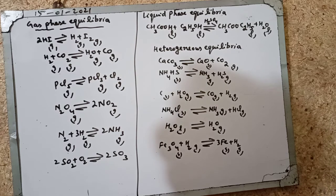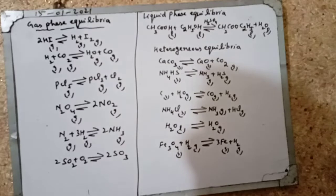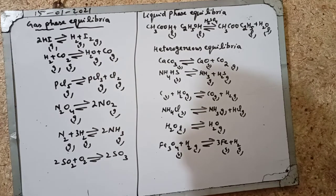CaCO3 when heated decomposes in equilibrium reversible reaction and gives CaO and CO2, calcium oxide and carbon dioxide. NH4HS ammonium hydrogen sulfide when heated gives NH3 and H2S.